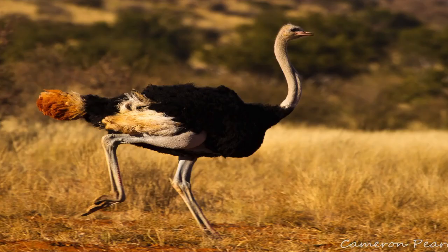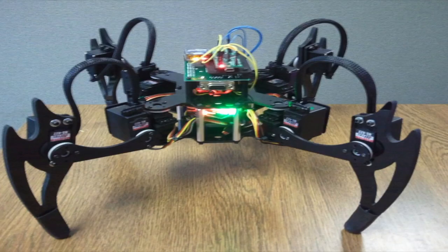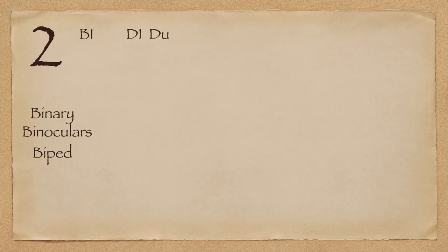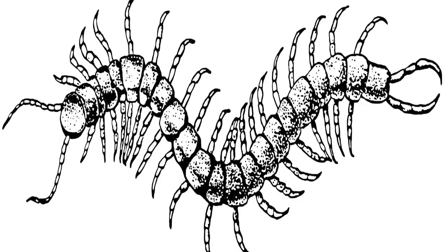Next up is biped. Bi means two and ped means foot, so biped is any animal that uses two legs for walking — humans are biped. A quadruped would be any animal that uses four legs for walking, like a cow or a dog. A centipede, for example — centi is hundred and ped means foot — so a centipede is an insect which has a hundred legs.